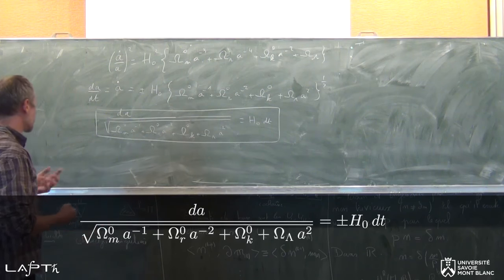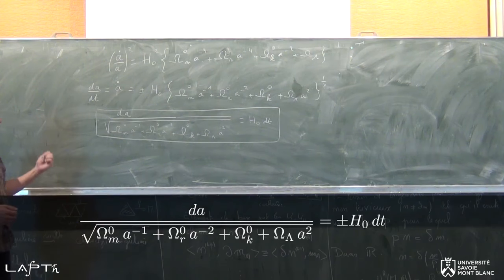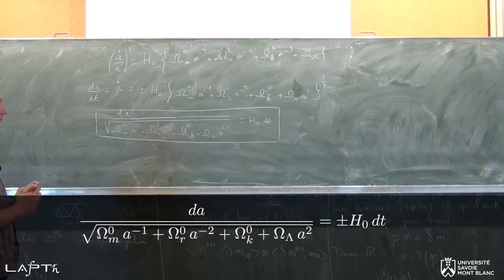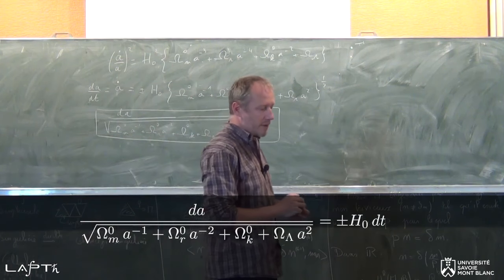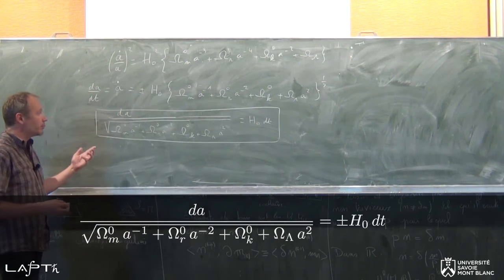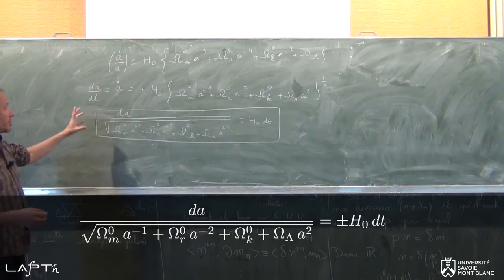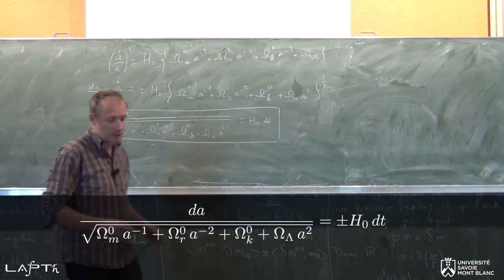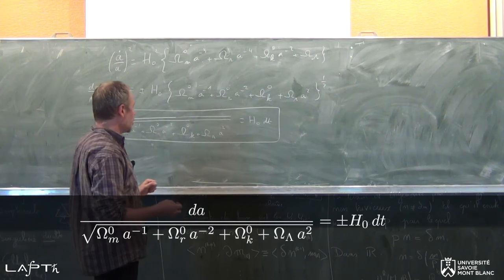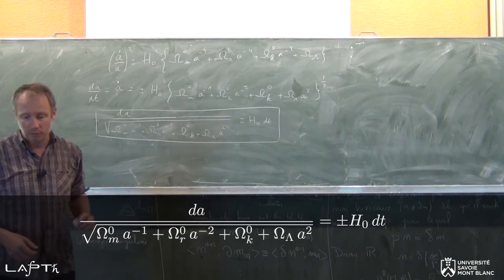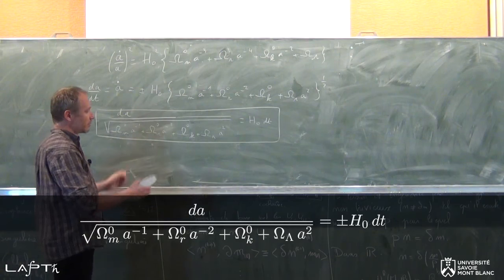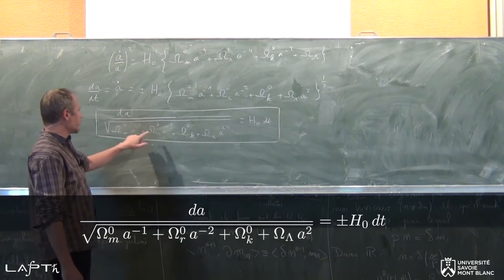Ce qui m'intéresse ici, c'est de trouver des situations physiquement intéressantes dans lesquelles on peut effectivement résoudre l'équation différentielle analytiquement. Avertissement : ça va être des maths. Il s'agit essentiellement d'intégrer, de trouver une primitive. Il va y avoir des changements de variable pas forcément très compliqués, mais il va y en avoir. Je vais m'intéresser à des situations dans lesquelles certains des Ω sont nuls. Avant de le faire, je voudrais quand même vous faire remarquer que ces quatre grandeurs ne sont pas indépendantes.